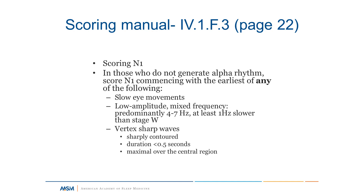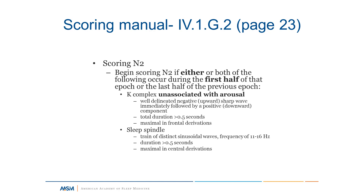For scoring N2, you transition from N1 to N2 if either or both N2-defining features occurred during the first half of that epoch or the last half of the previous epoch. There are two N2-defining features: a K-complex, which is a well-delineated negative sharp wave immediately followed by a positive component with total duration greater than half a second, maximal in the frontal derivations; and a sleep spindle, which is a train of distinct sinusoidal waves at 11 to 16 hertz, duration greater than half a second, maximal in the central derivations.